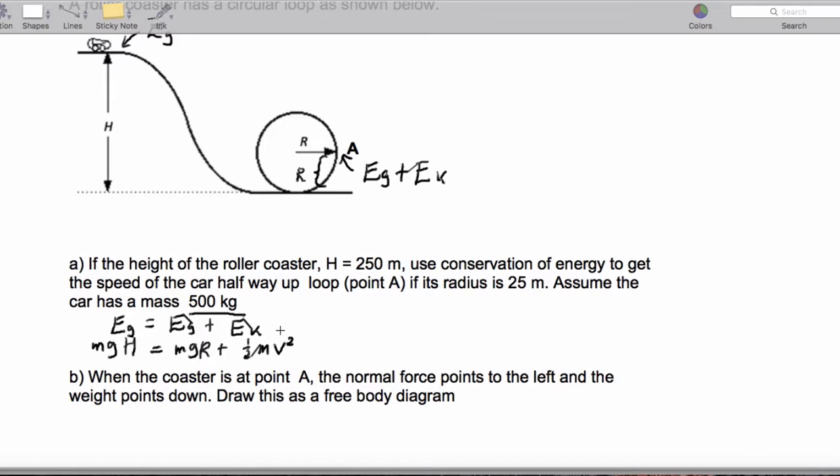So when we throw in our numbers, let's go ahead and solve that here. We'll say 500 times 10 times our height, which is 250, equals 500 times 10 times this radius of the loop, which is the new height, and that's going to be 25 plus one half times the 500 times the V squared.